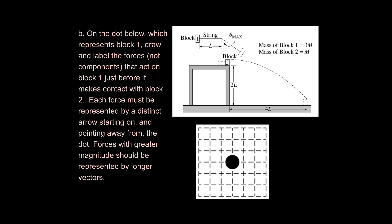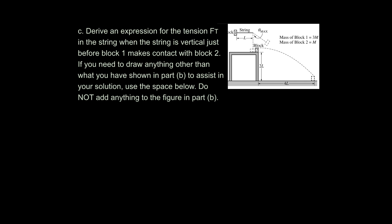The next thing they ask is to draw a free body diagram of the object at the bottom of the swing. Since it's moving in a circular path, there must be a net force towards the center — centripetal acceleration. We draw two forces: gravity and tension. You will not get the point unless you draw tension longer than gravity, because tension must exceed gravity for circular motion at the bottom.